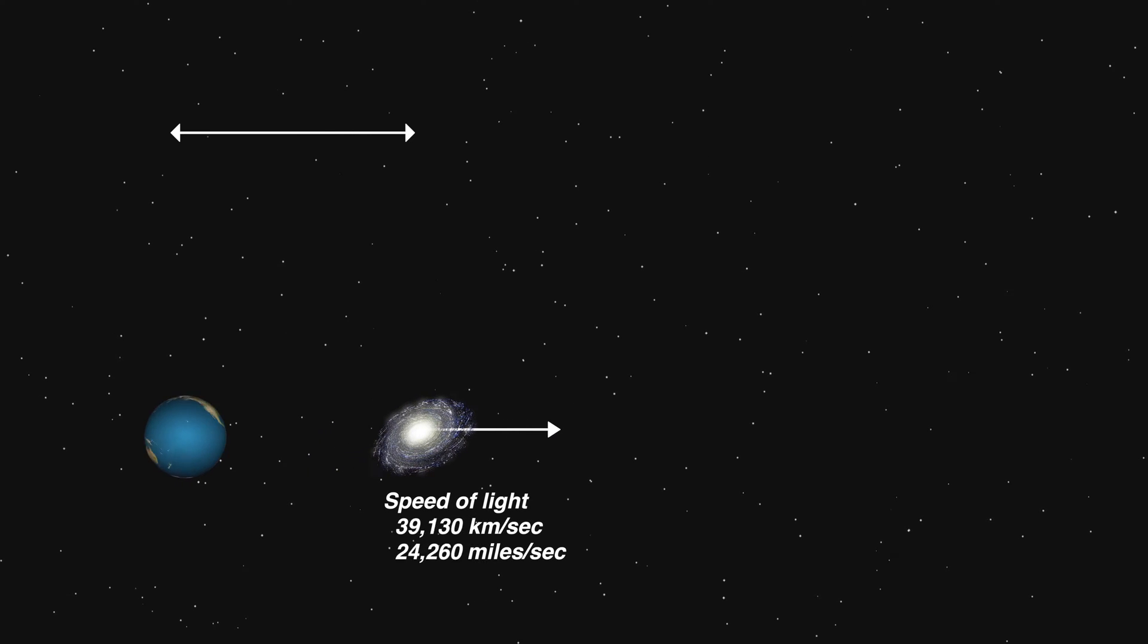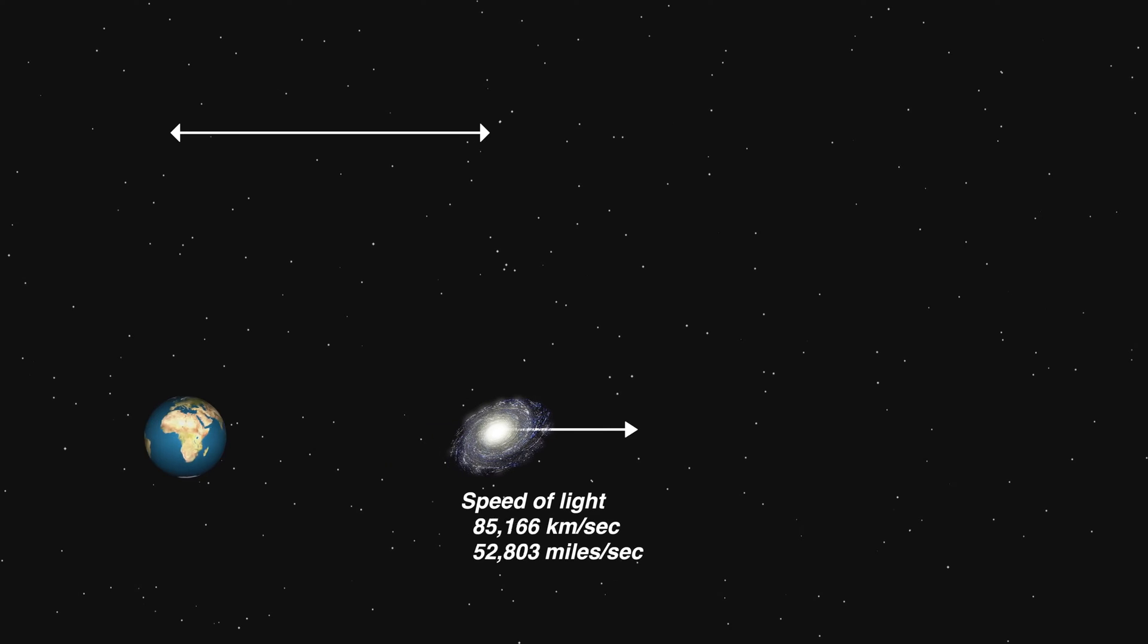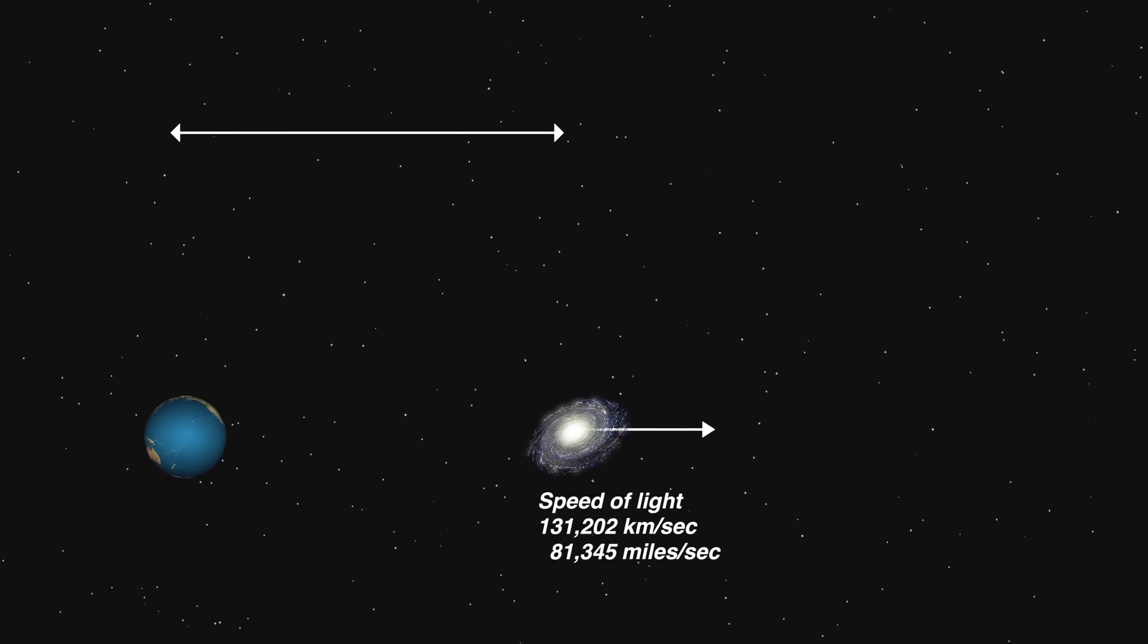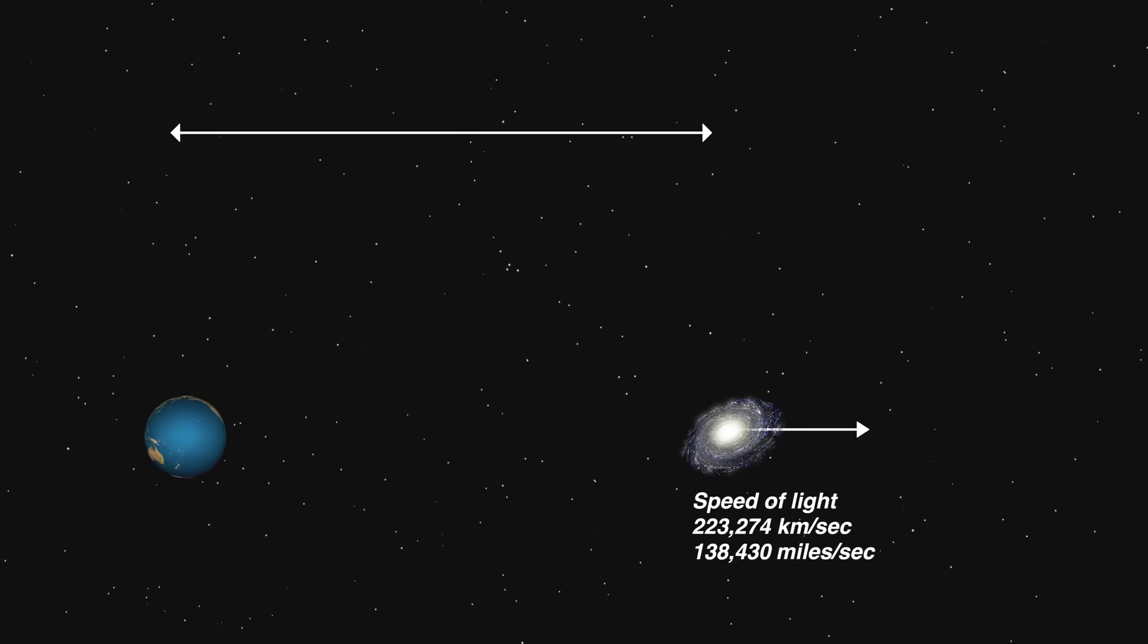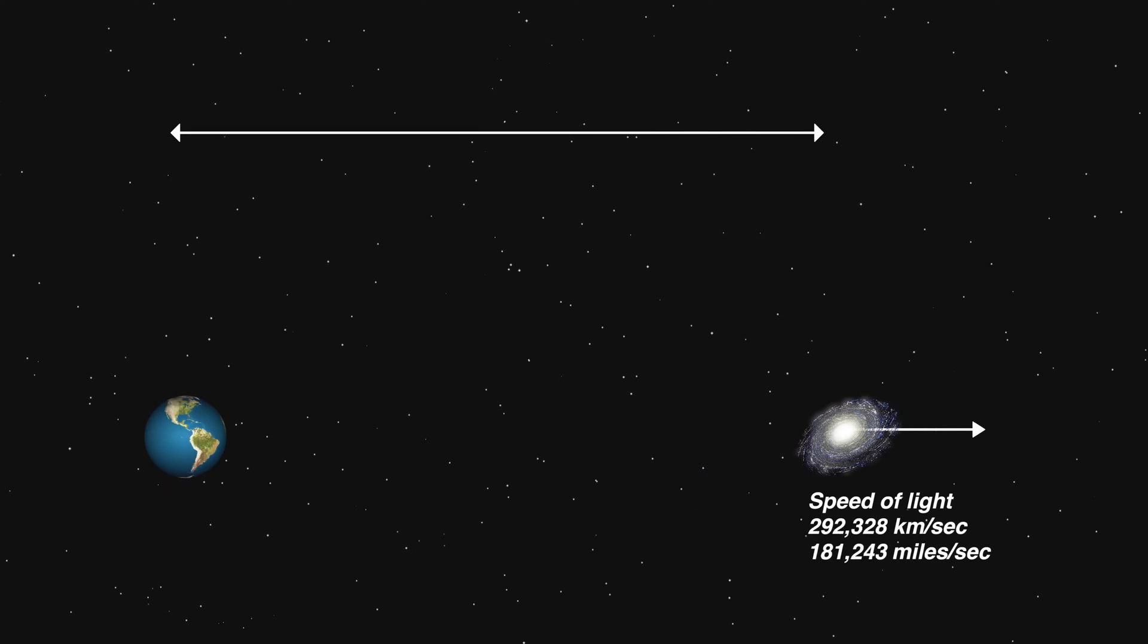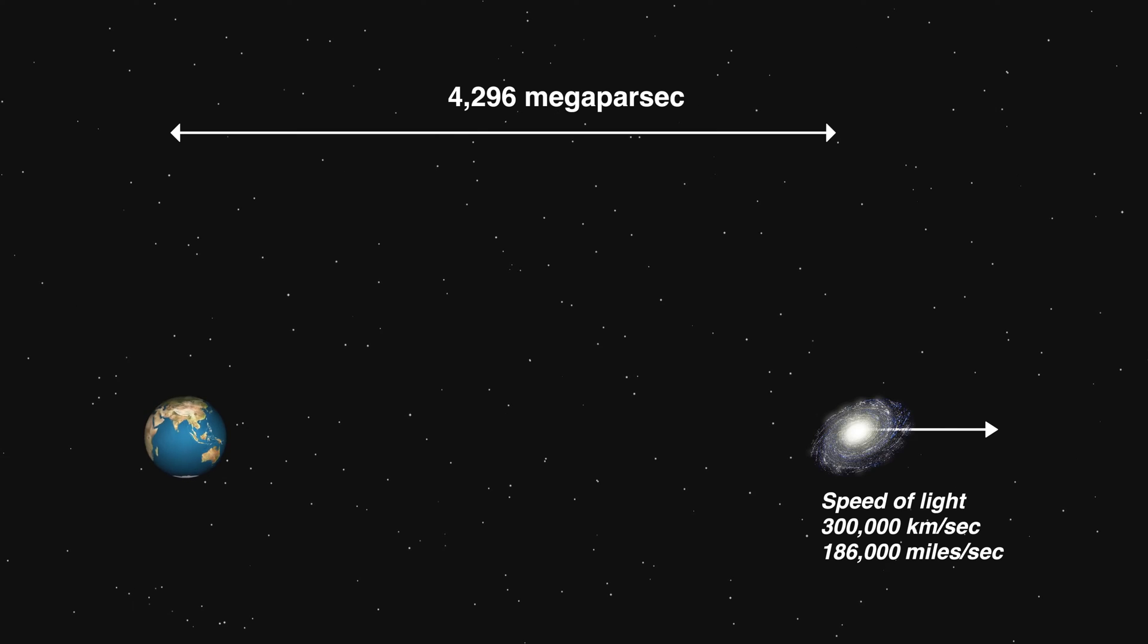So, we know that the speed of light is 300,000 kilometers per second. So we can figure out how far away we have to go to have a galaxy moving away from us at the speed of light. That turns out to be 4,296 megaparsecs or just shy of 14 billion light years.